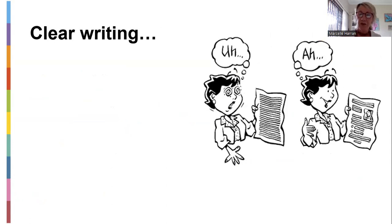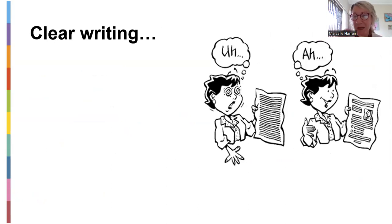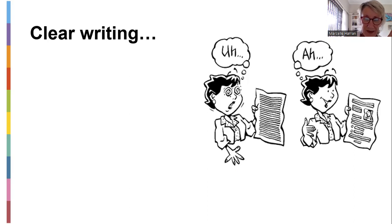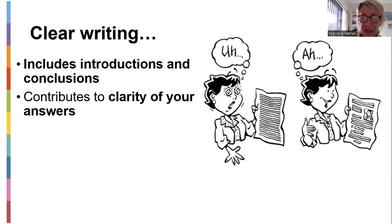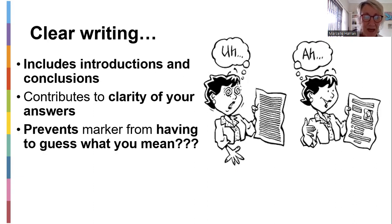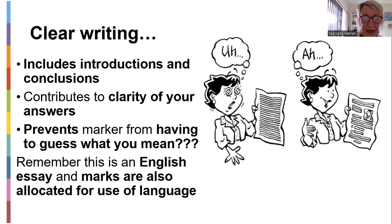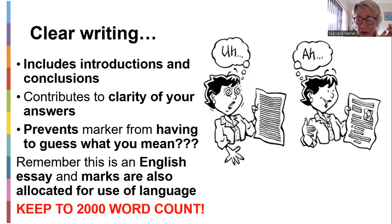Clear writing means that when a person looks at what you've written, it doesn't look like one big long paragraph. In the second image you can see she says 'ah' because there are bullets, scripts, pictures — it's so much easier to read something that is coherent and cohesive. Clear writing includes introductions and conclusions. It prevents a marker from having to guess what you mean. Remember, this is an English essay and marks are also allocated for use of language — and you are English teachers. Please keep to the 2000 word count. Nothing more than that.